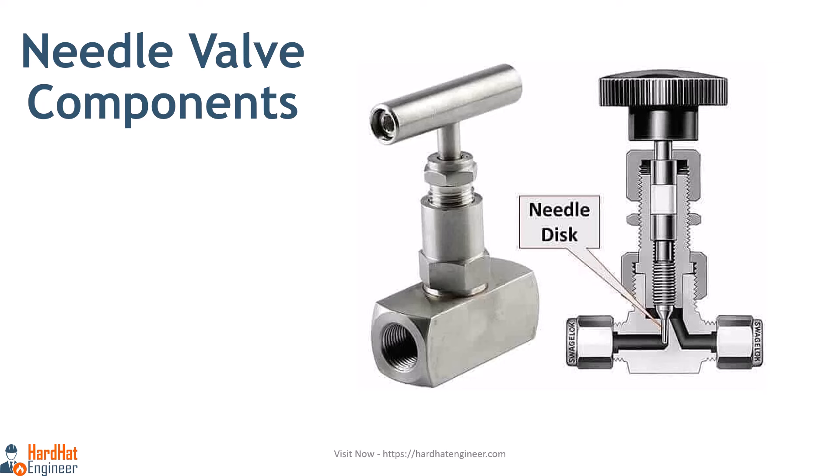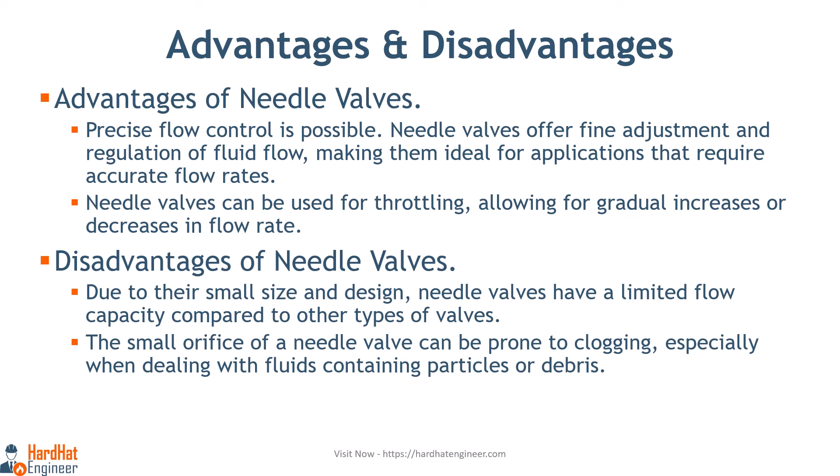Needle valves can be used in situations where flow must stop gradually, and in applications where precise adjustments of flow are required or where a small flow rate is desired, such as sample points in piping. Advantages: precise flow control is possible; needle valves offer fine adjustment and regulation, making them ideal for accurate flow rates, and can be used for throttling. Disadvantages: limited flow capacity compared to other valve types, and the small orifice can be prone to clogging when dealing with fluids containing particles or debris.